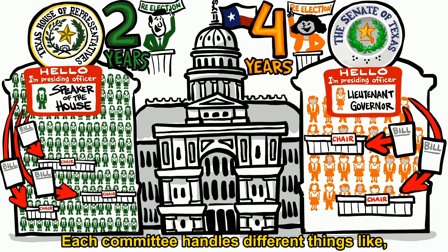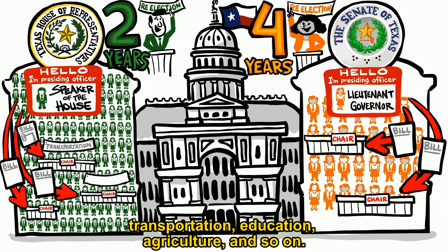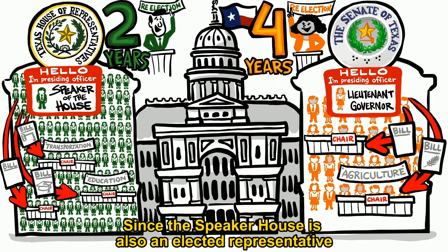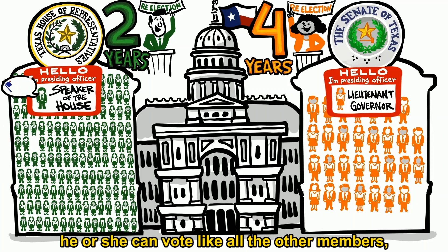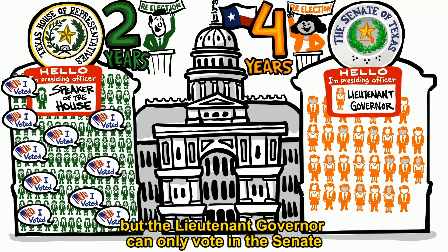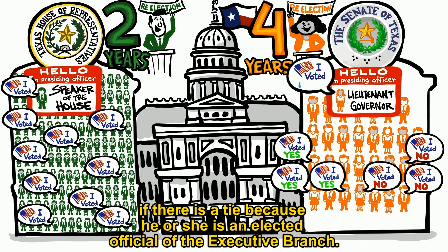Each committee handles different things like transportation, education, agriculture, and so on. Since the Speaker of the House is also an elected representative, he or she can vote like all the other members, but the lieutenant governor can only vote in the Senate if there is a tie, because he or she is an elected official of the executive branch.